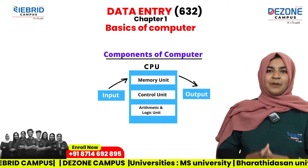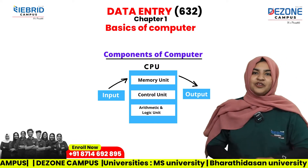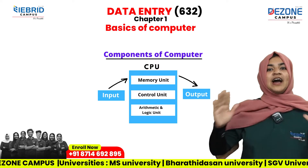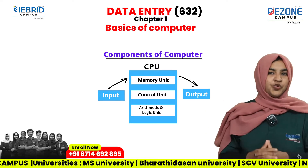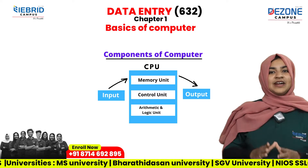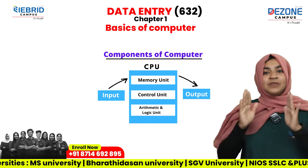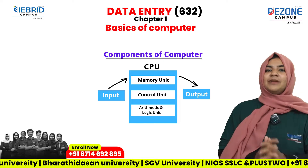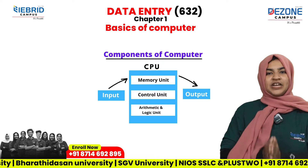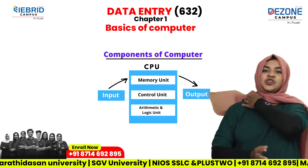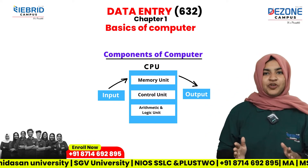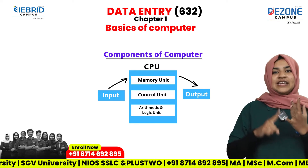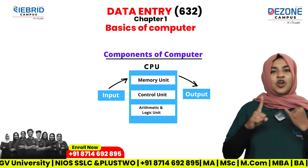The last component of the computer is the control unit. So, what are the five basic components of the computer? They are: input unit, output unit, memory unit, control unit, and ALU — that is, the Arithmetic and Logic Unit.